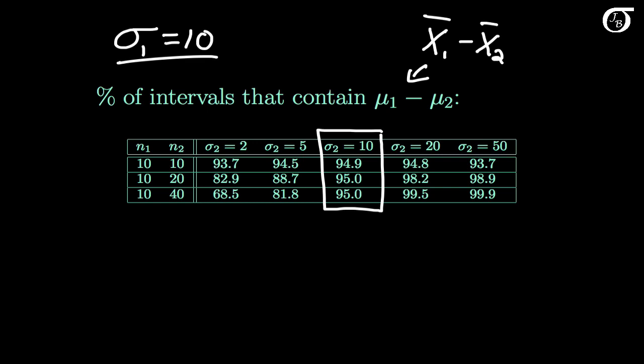In the top row, the standard deviations change while keeping sample sizes equal at 10. We can see that when the sample sizes are equal, the percentages containing mu1 minus mu2 are actually quite close to 95%, even when the population standard deviations are very different. So the procedure works quite well for equal sample sizes, even when the population variances differ.